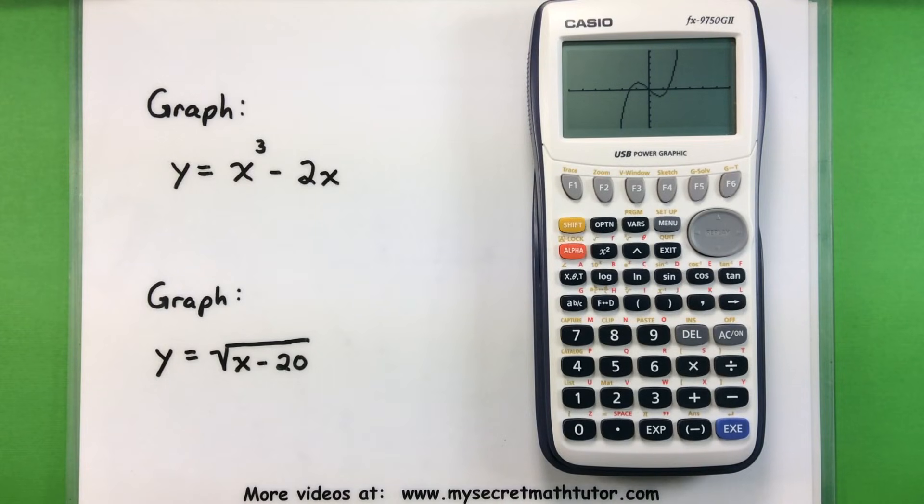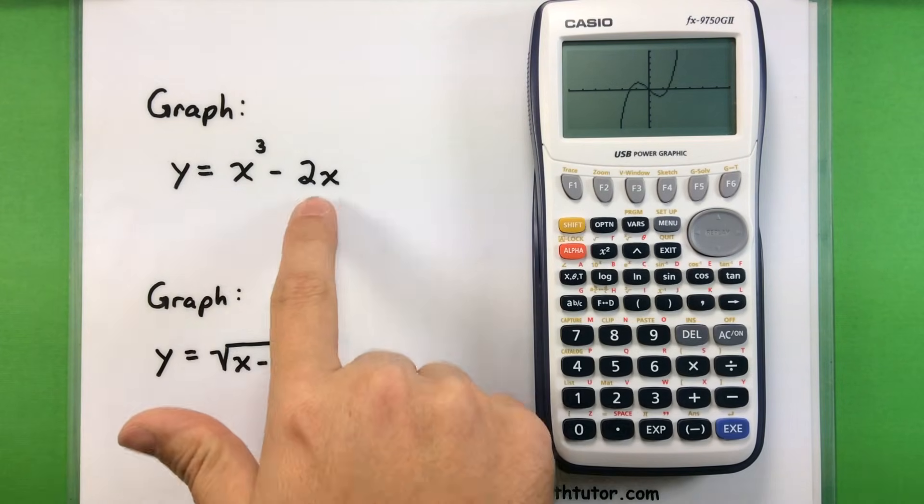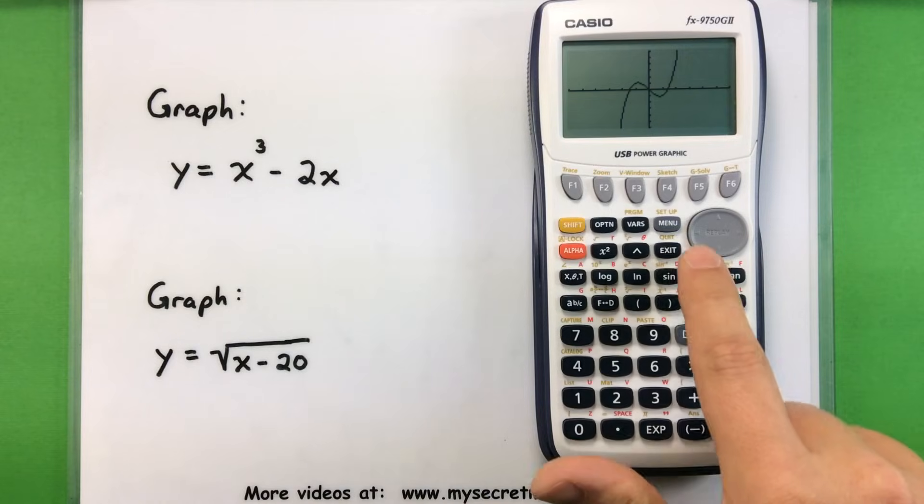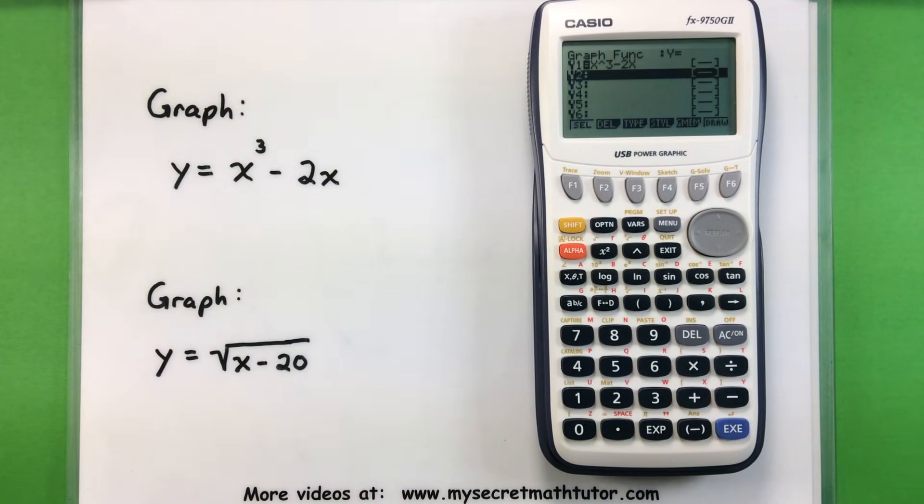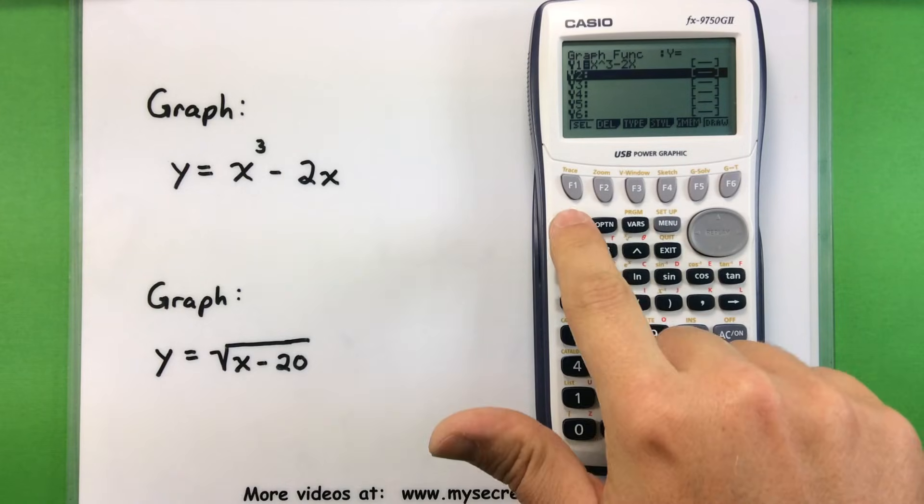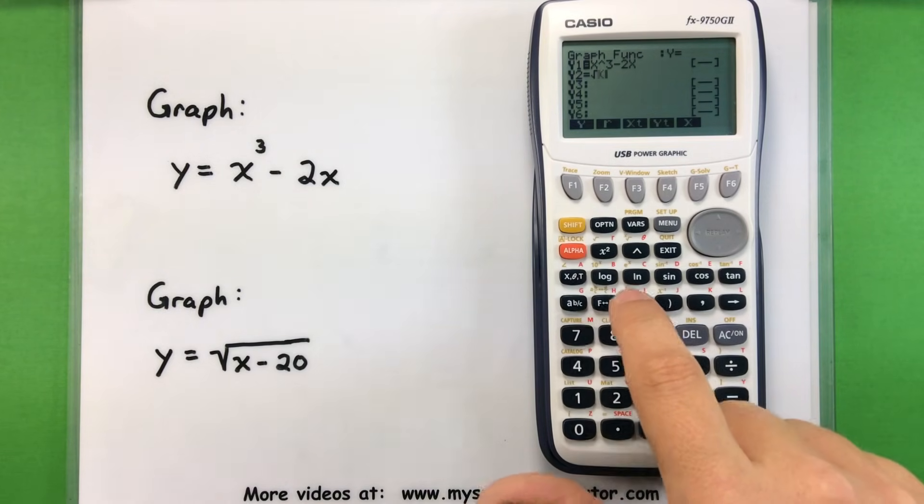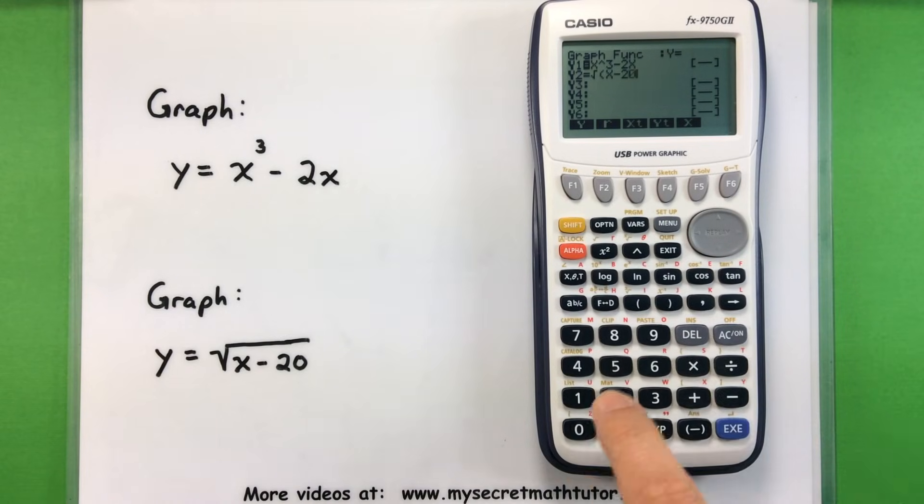Now, if you want to make some adjustments or you made a mistake, you can go back to the equation. Just press your exit button, and you're back at your function menu. And then you can either delete it, rewrite it, you know, make some adjustments how you see fit. Now, we're also going to graph another equation on here, and I'm going to put that under Y2. So this one is the square root of parentheses x minus 20, close parentheses. Now I have two different graphs. Let's press Enter. Now they're both stored in the calculator.